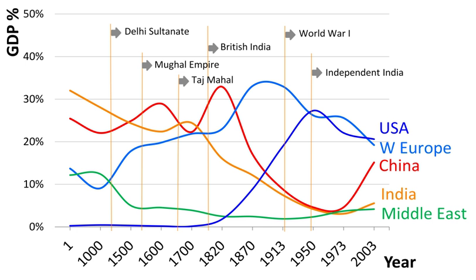India and China, the two largest economies respectively, accounted for more than half the size of the world economy. Despite the high GDP, these nations being major population centers, did not have significantly higher GDP per capita.